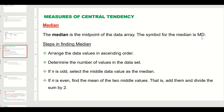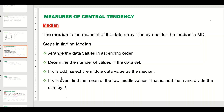There are a few steps you need to know before you calculate the median. First, arrange the data values in ascending order, then determine the number of values in the data set. If n is odd, select the middle value as the median. If n is even, find the mean of the two middle values — add those two values and divide by two.